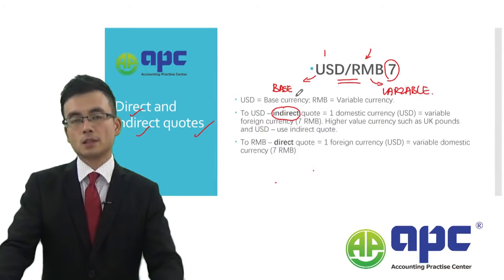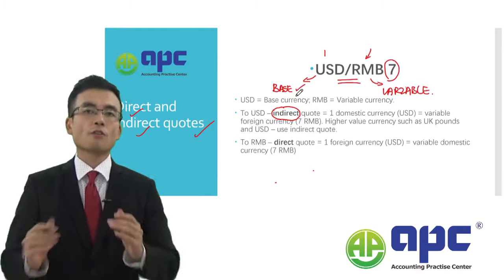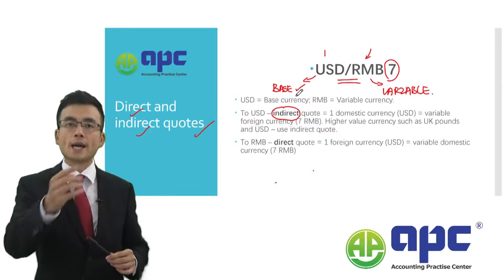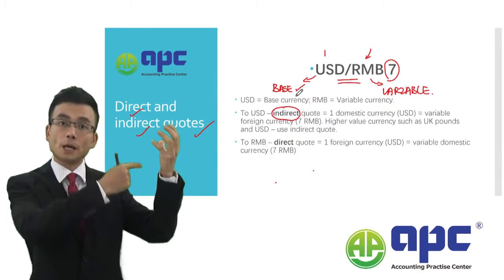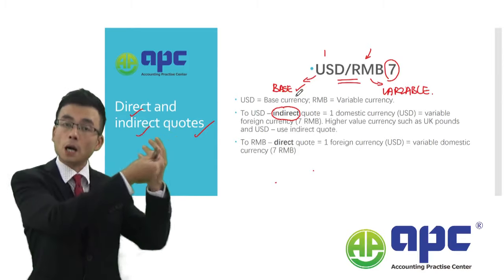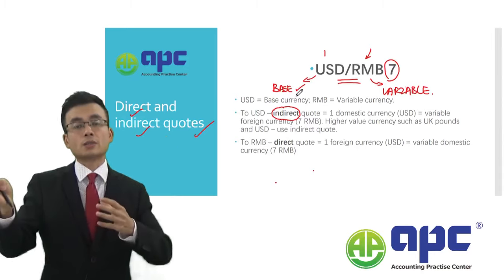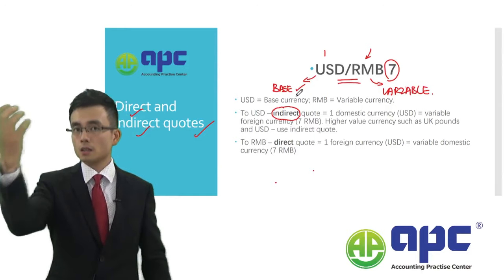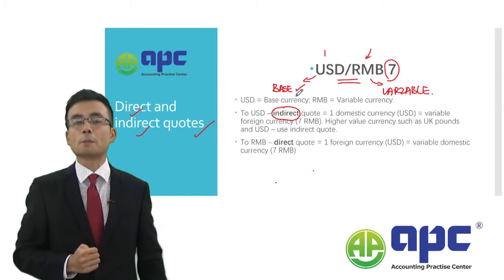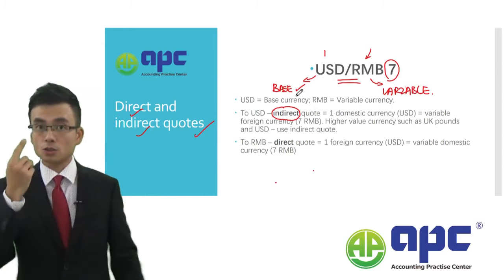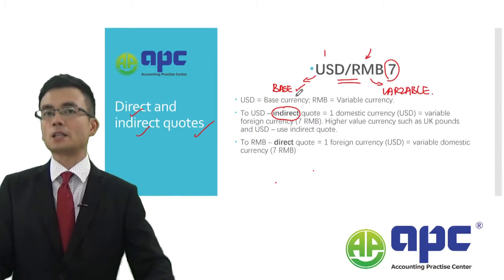When reading the quote, we always focus on the base currency. Think about it this way: if you want to buy a company share and that company's share price is seven dollars, you have to give seven dollars to buy it. That company share price is the base currency, which means the USD — we are looking at how much the USD actually is. In order to have one base currency, which means one USD, you have to give up seven RMB.